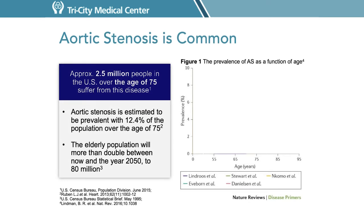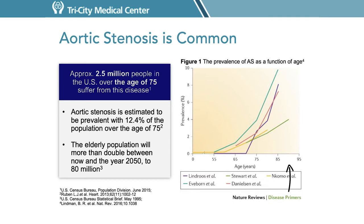How common is aortic stenosis? Aortic stenosis is very common. It is the most prevalent form of cardiovascular disease in the western world after high blood pressure and coronary artery disease. It is estimated that 2.5 million people in the U.S. over the age of 75 suffer from aortic stenosis — about 12.4% of that population. With the aging population on the rise, the prevalence is anticipated to grow. As you can see in the graph, as patients reach the age of 75 and older, aortic stenosis becomes more and more prevalent.